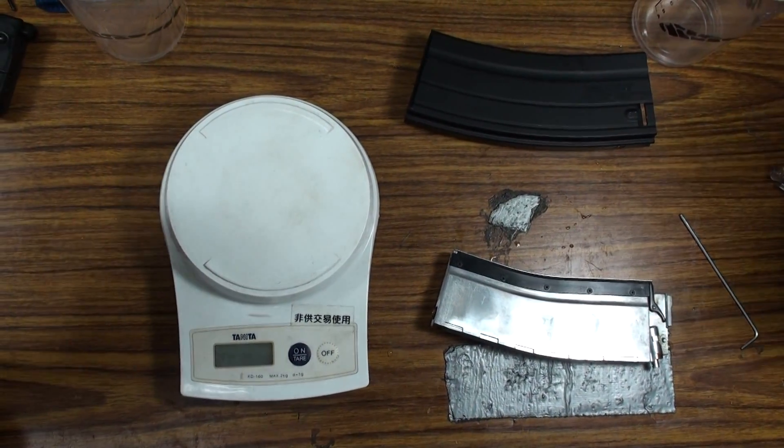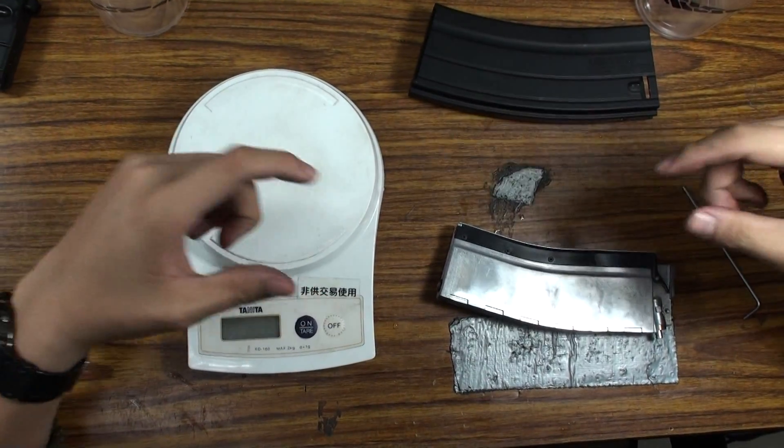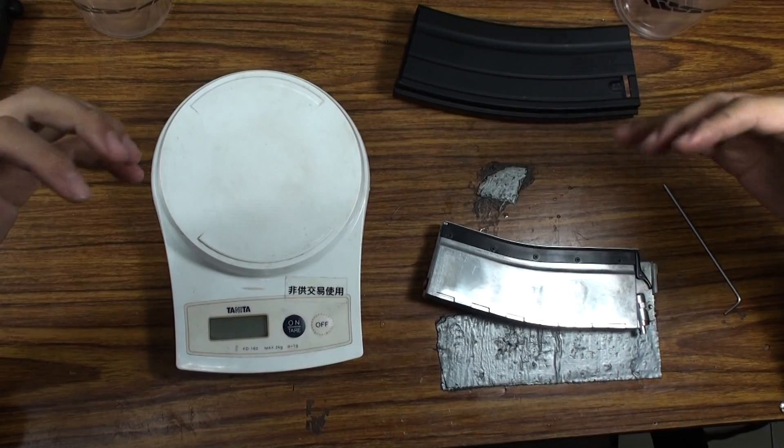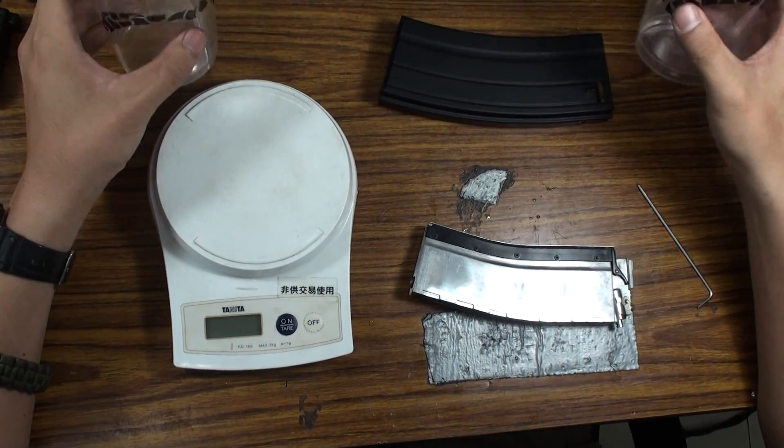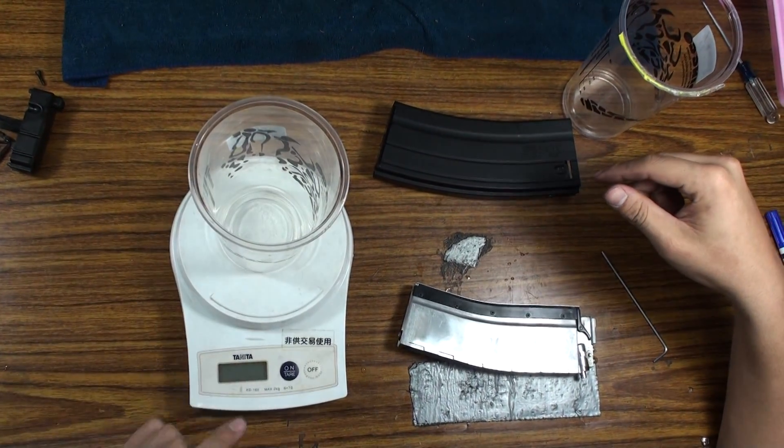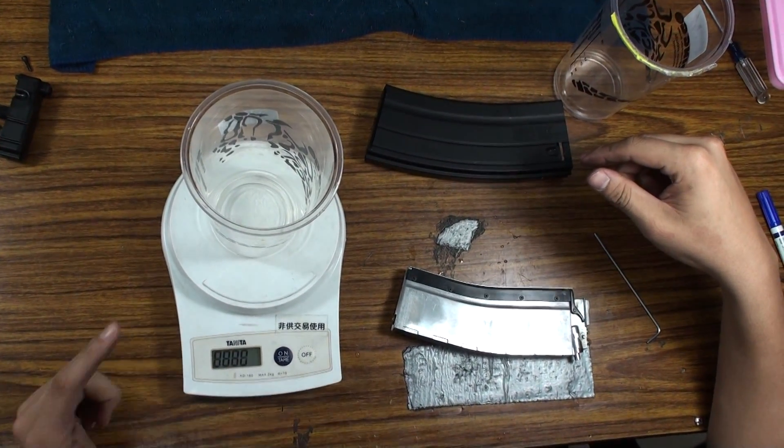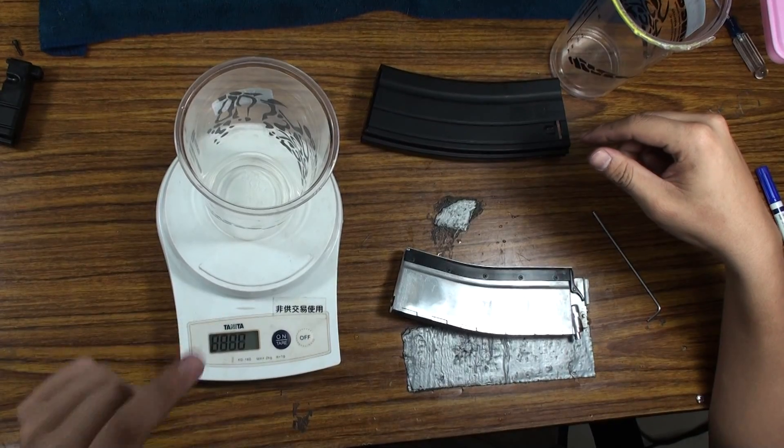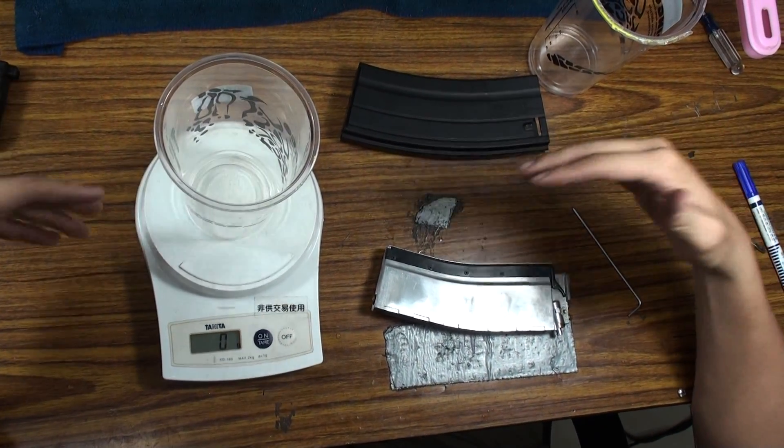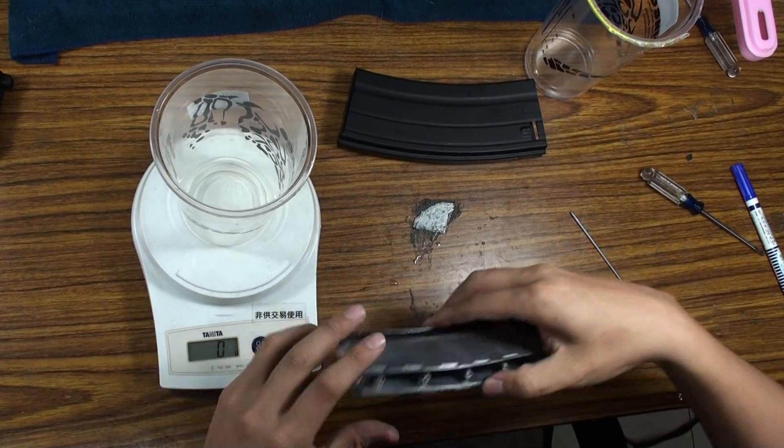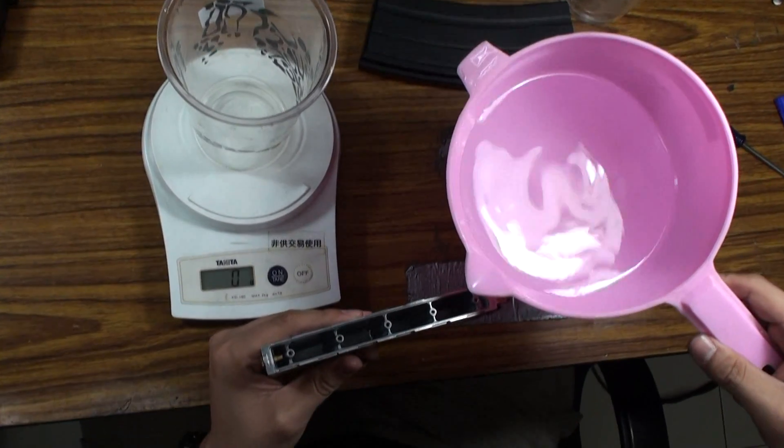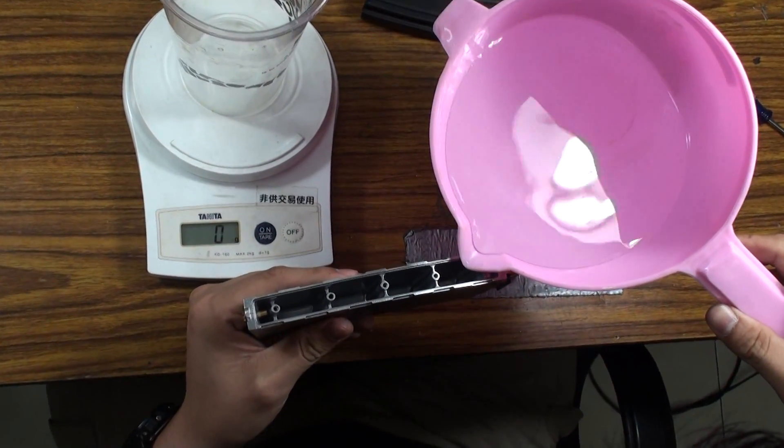Now we want to measure the space difference between the old version and the new version. We have a simple solution: we use two identical cups and measure the weight at the beginning so the cup itself won't count into the total weight. Now we have the old version—we want to put water into this magazine as much as possible.